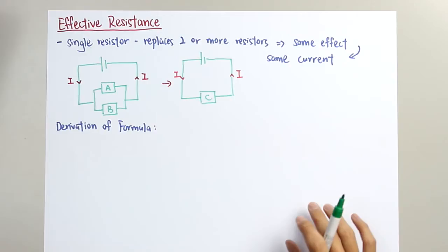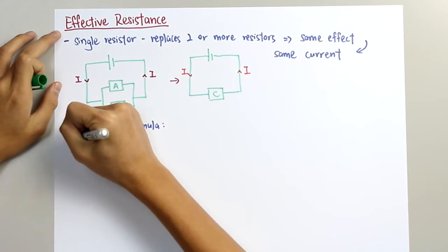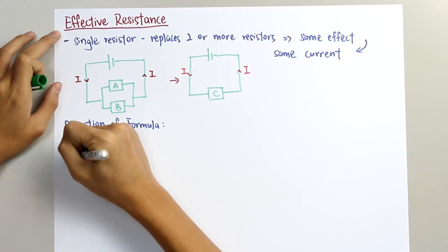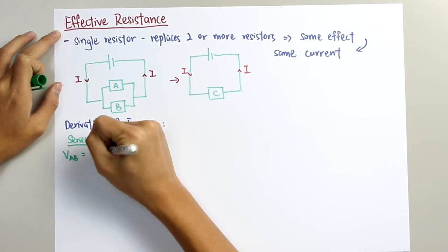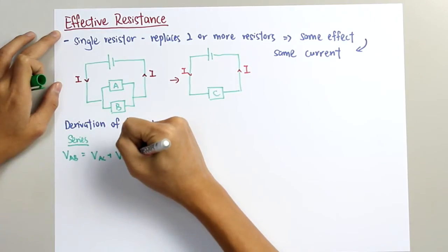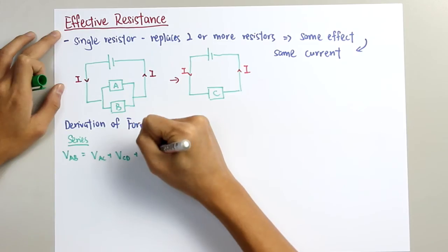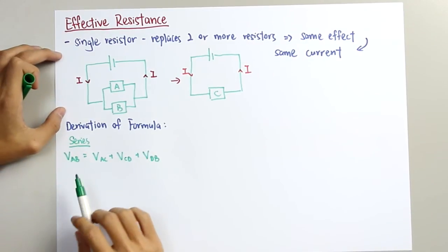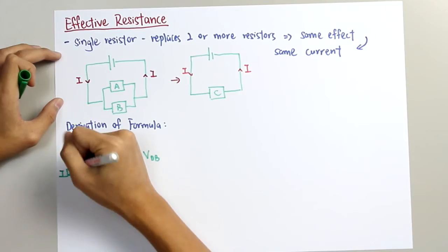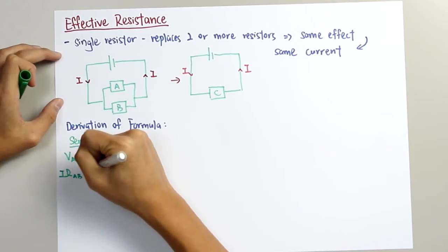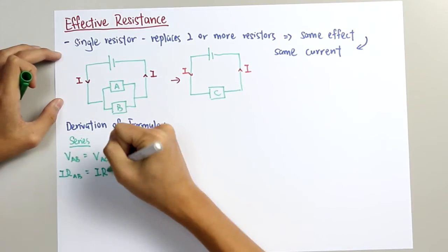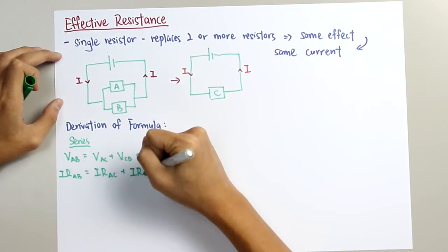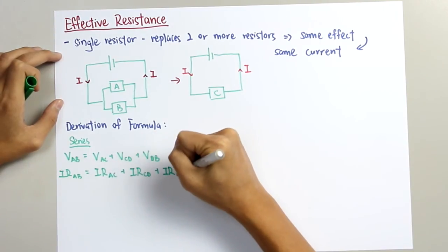So I can say that in series, the potential difference across AB equals to the sum of potential difference across AC, CD, and DB. And since we know that V equals to I times R, and the current for series will always be constant, therefore we can derive it into this formula: I times RAB equals to I times RAC plus I times RCD plus I times RDB.